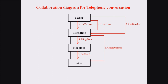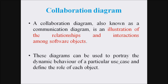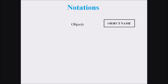In this lecture we discussed what is a collaboration diagram. A collaboration diagram, also known as a communication diagram, is an illustration of the relationship and interaction among software objects. It is a type of interaction diagram used to portray the dynamic behavior of a particular use case and define the role of each object. The different notations include objects, actors, links, and messages.